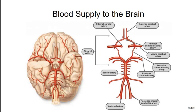The brain requires 20% more oxygen than other organs to function adequately. It receives arterial blood from the internal carotid arteries as well as the vertebral arteries. The circle of Willis, located at the base of the brain, communicates with the other arteries to ensure continuous blood flow. If there is a blockage in one area, the circle of Willis allows blood in from other areas to continue oxygenating the brain.